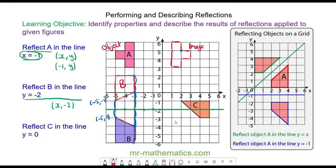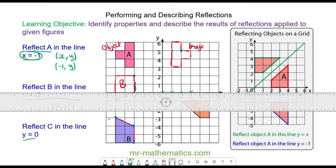Do you want to try and reflect object C in the mirror line y is equal to 0? Pause the video and you can resume it when you're ready. Okay, so I'm going to draw the line y is equal to 0, and this will pass through the coordinates. The line y is equal to 0 is also called the x-axis.